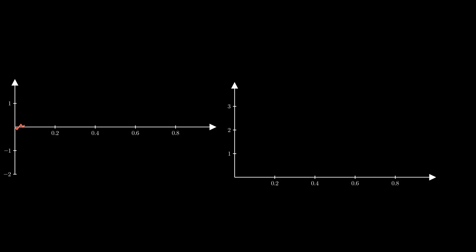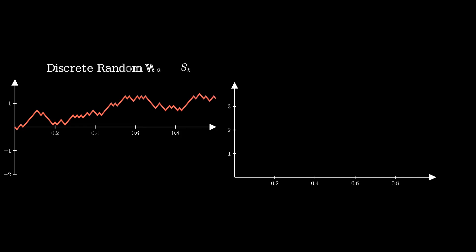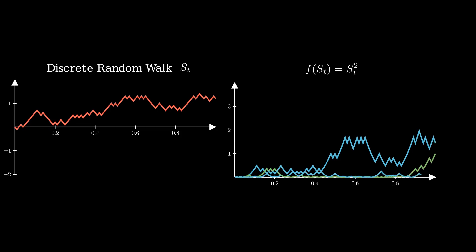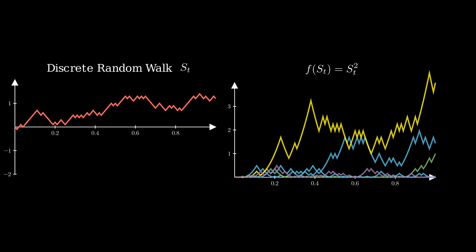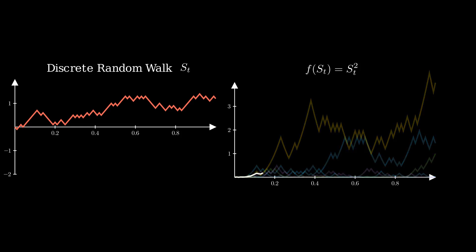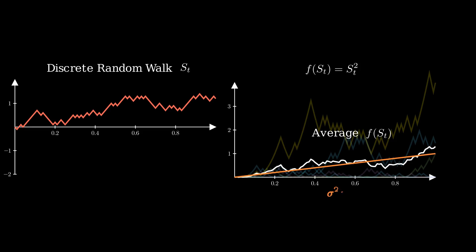To deepen our intuition, let's step back to a discrete setting. This is a random walk approximating a Wiener process with tiny steps. Now we square it — each step contributes a small squared term. Across many paths, the average of these squared terms builds up over time. In this discrete model, the squared steps contribute consistently, becoming the extra term in Itô's lemma as steps get smaller. It's like finding order in randomness.